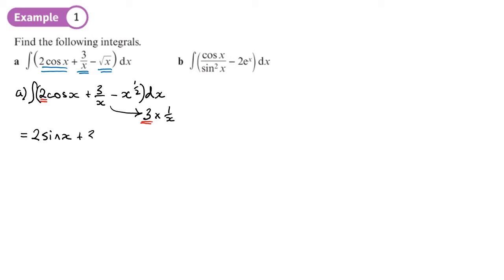The 3 over x, which is the same as 3 times 1 over x, that will become 3 lots of log x. Remember the x needs to be in a modulus sign. Then the x to the power half, we add one to the power which is 3 over 2, then we divide by the new power. So we basically need to divide by 3 over 2, which is the same as multiplying by 2 over 3. This is basically dividing by the new power. Plus c, so there's our final answer for the first one.